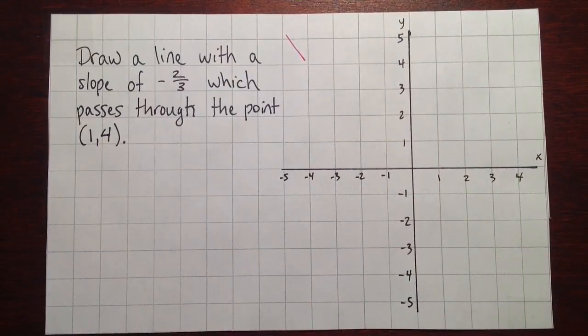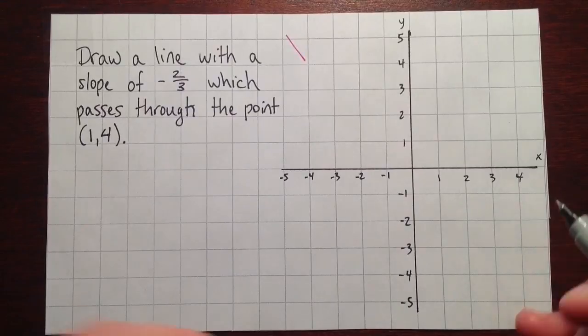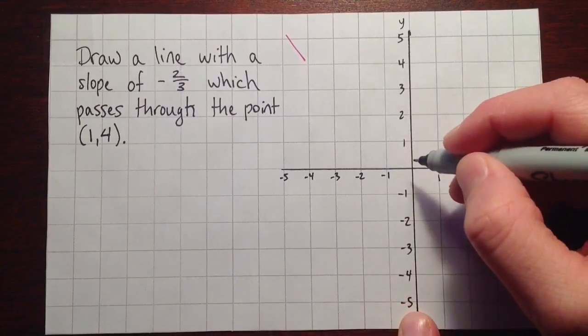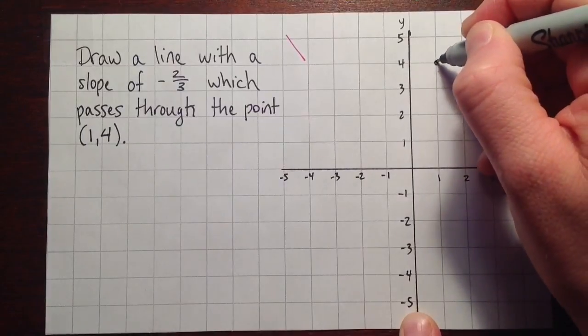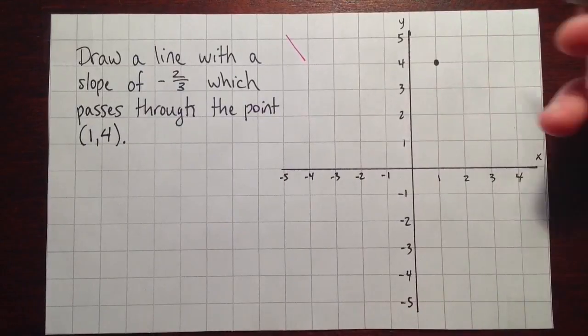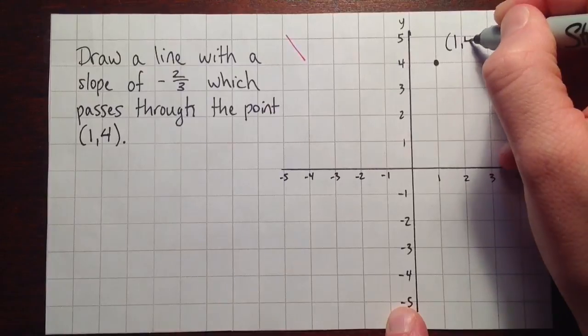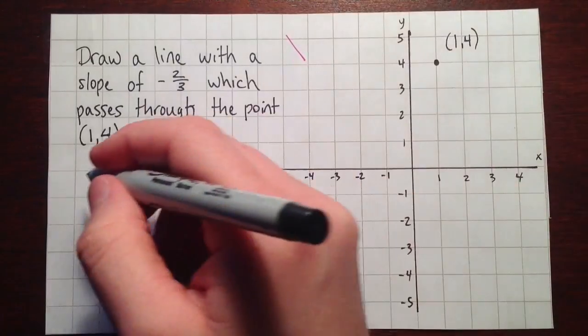Okay, so we'll start with the point. Last time we knew the y-intercept; here we just know a random point. So the point (1, 4), the x value is 1, and the y value is 4.